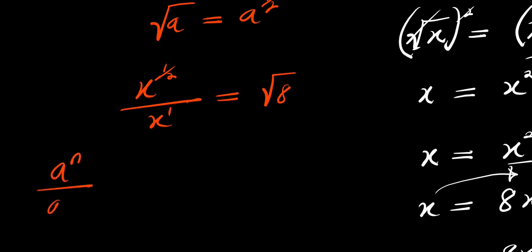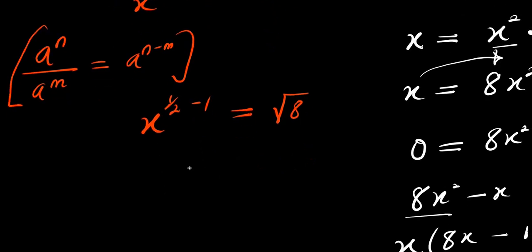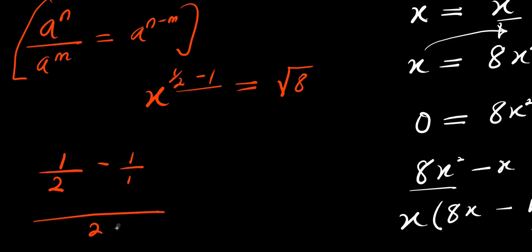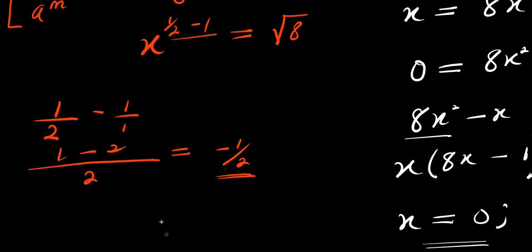If you have a to the power of n divided by a to the power of n, this equals a to the power of n minus n. So right now we are going to have x to the power of 1 over 2 minus 1, and this equals square root of 8. We subtract 1 from one-half: 1 over 2 minus 1, the LCM is 2, giving 1 minus 2 over 2, which is negative 1 over 2. So this gives us x to the power of negative 1 over 2 equals square root of 8.